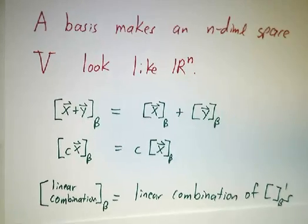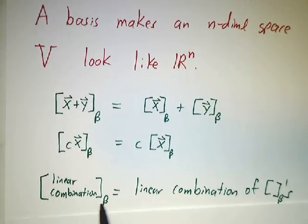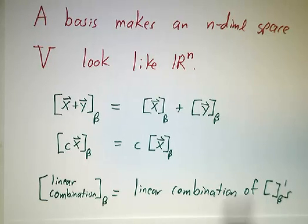In general, if you do linear combinations and then take coordinates, that's the same thing as taking coordinates and then applying a linear combination. The coordinates of 3x plus 5y are 3 times the coordinates of x plus 5 times the coordinates of y.